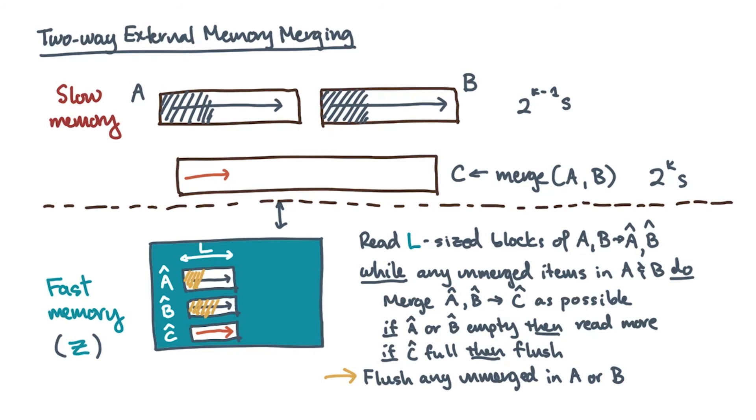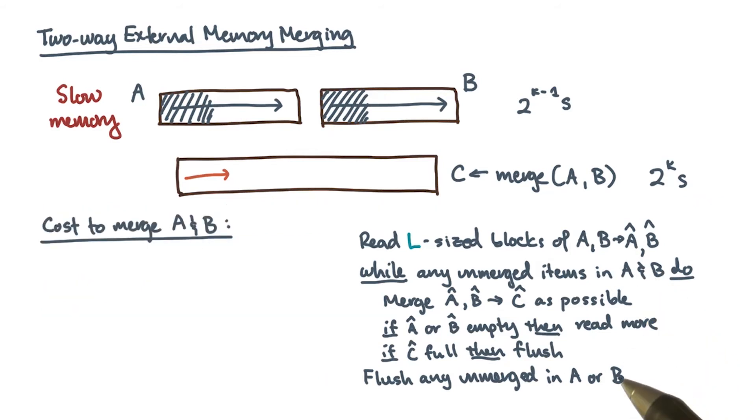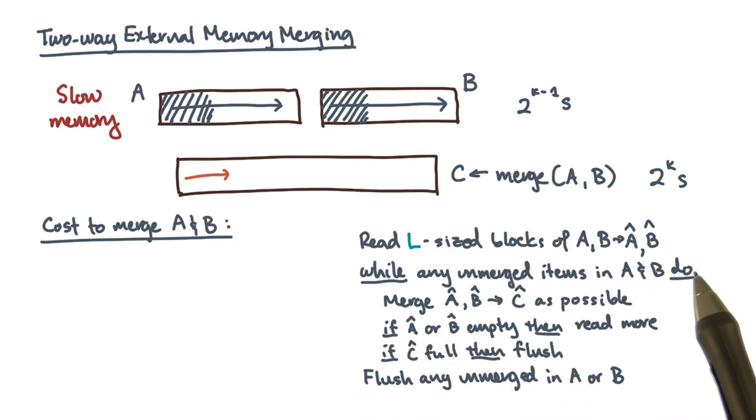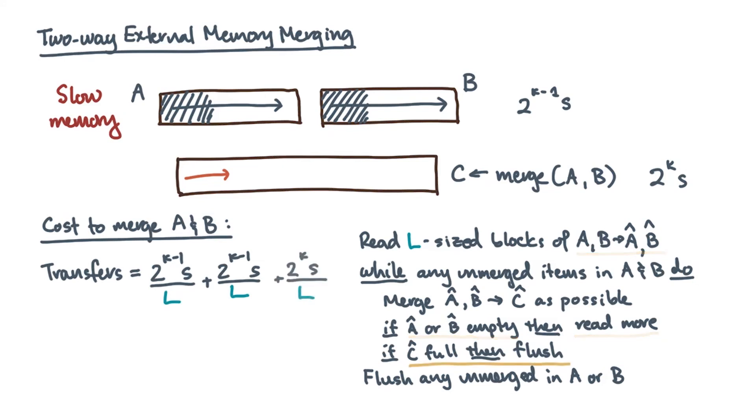So when all is said and done, what does it cost to merge the pair of runs A, B? This scheme only loads elements from A or B from slow memory once, and only writes a given output block once. So that's a total of 2^(k+1) × s / L transfers. Regarding comparisons, there are also just a linear number of them. This is all just to merge one pair A and B.